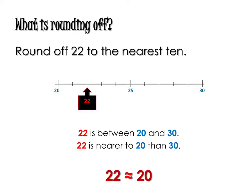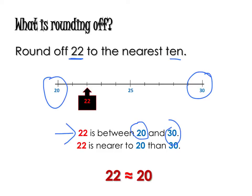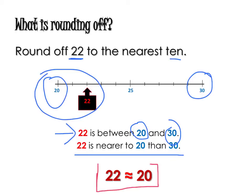Now let's talk about rounding off. Before we do that, let's recap what we've learned when it comes to rounding off whole numbers. Let's say I'm asking you to round off 22 to the nearest 10. You should know that 22 is between 20 and 30. So when we talk about the nearest 10, it's 10, 20, 30, 40. Because 22 is nearer to 20 as compared to 30, as you can see from this number line, 22 is approximately equal to 20. Take note of this sign — this is the approximately equal sign. This is what we've learned for whole numbers.